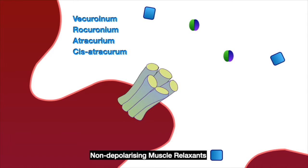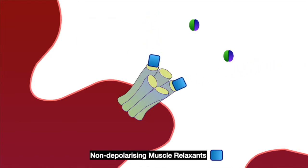Non-depolarizing blockers antagonize the action of acetylcholine in a competitive manner at the postsynaptic nicotinic receptor. They do not produce conformational changes in the receptor. Binding to one or both alpha subunits prevents access by acetylcholine to depolarize the receptor.